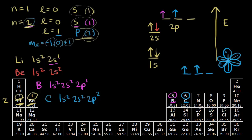Next we have nitrogen, which has seven electrons. So far we have one s two, two s two. Following Hund's rule, we're not going to add the electron to an already-occupied orbital — we add it to an unoccupied orbital and keep the spins parallel to keep everything lower in energy. So nitrogen has three electrons in the two p orbitals, giving us two p three. The full configuration is one s two, two s two, two p three.